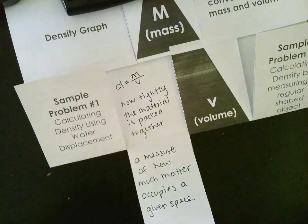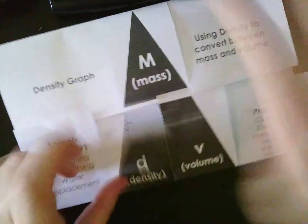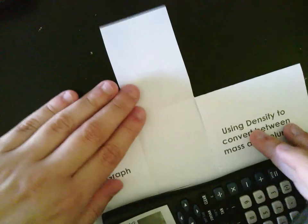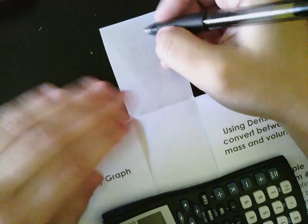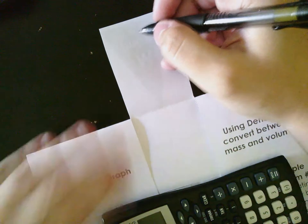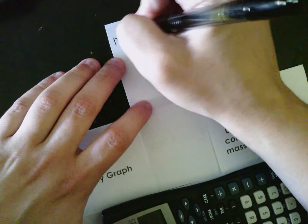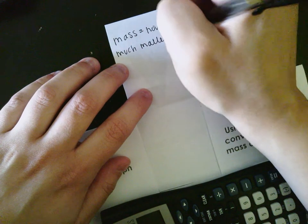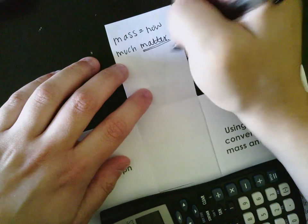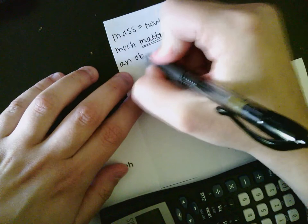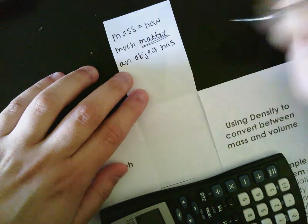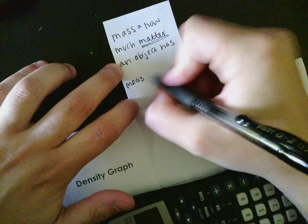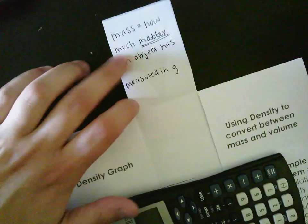The next tab I'm going to go to is mass — it's right here at the top, open it up. Mass was one of our vocab words for this lesson. Mass is a measure of how much matter an object has. We measure mass in grams — G means grams.